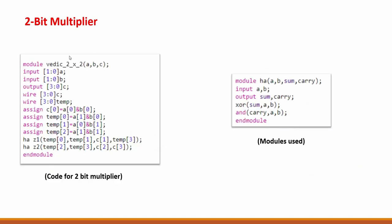Starting with the code — if you are familiar with Verilog, we define a module for a 2-bit multiplier with two inputs and one output. We define our inputs and outputs and implement the circuit we just saw using AND gates and half-adders. For the half-adder, I have made a separate module. This is the Verilog implementation of the circuit for a 2-bit multiplier using the Urdhva Tiryagbhyam algorithm.